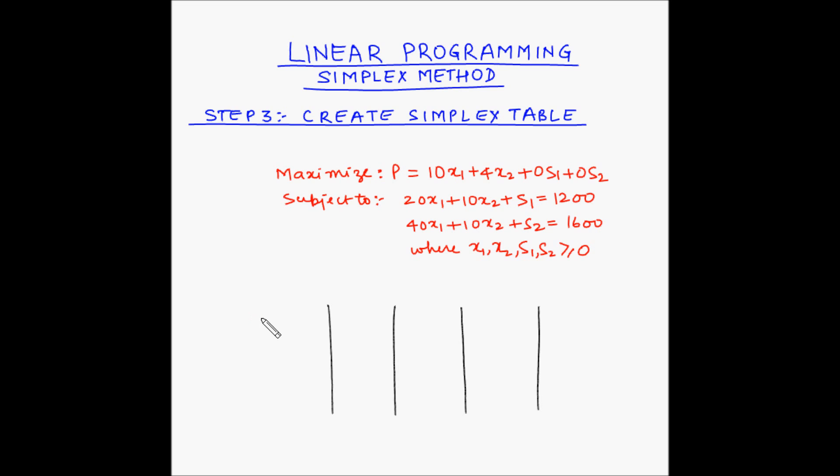Now the first row of this table is called the objective row and is denoted by cj. This row represents the profit or cost per unit of each variable in the objective function.